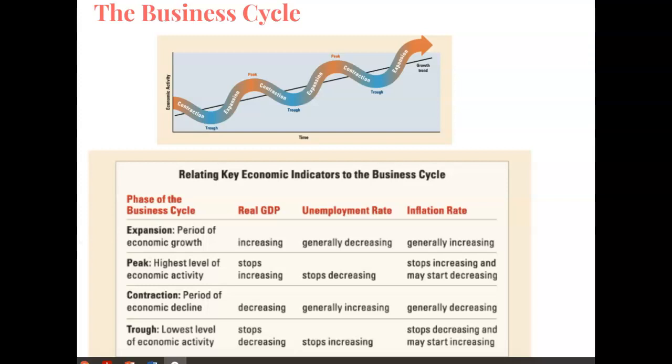After we've hit our peak, we enter into a period of contraction, or what we call economic decline. At this time, the real GDP is actually decreasing, the unemployment rate is generally increasing, and the inflation rate is generally decreasing.